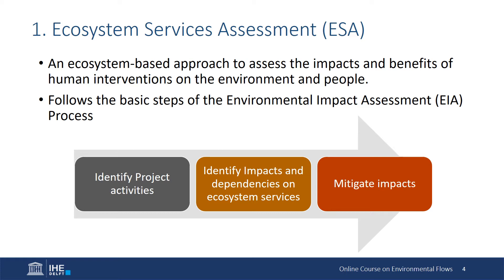In summary, the first step is identifying project activities that may affect the environment or ecosystems. Then, identify the impacts that this can have on ecosystem services or on those groups of individuals that depend on them. And identify mitigations or measures to reduce the impacts on ecosystems. Impact assessment will consider how project activities might affect the capacity of ecosystems to provide specific services and what measures should be implemented to mitigate the predicted impacts.